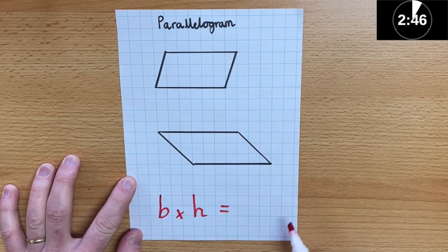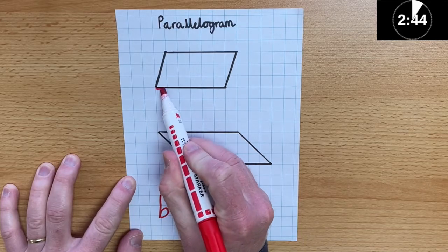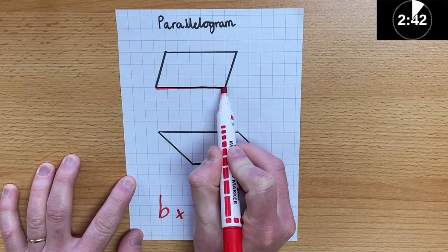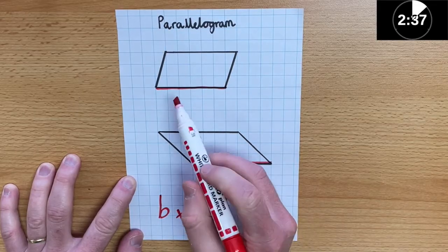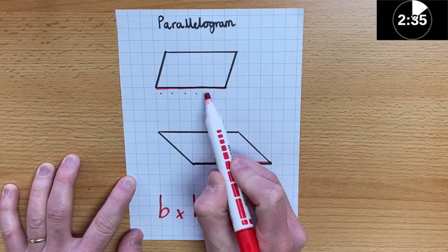What does base mean though? The base is always the bottom line of the shape. So, here's the base, here's the base of the parallelogram. So, I can see the base is 1, 2, 3, 4, 5, 6.